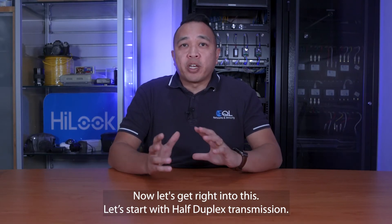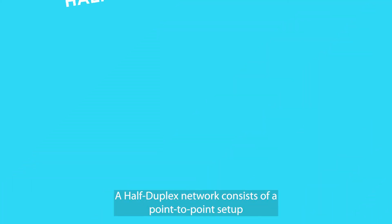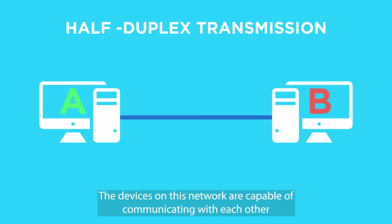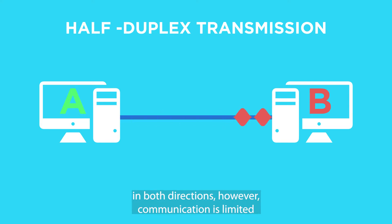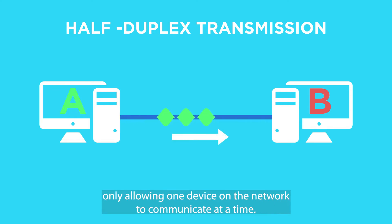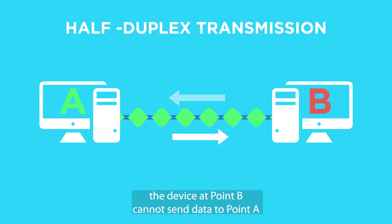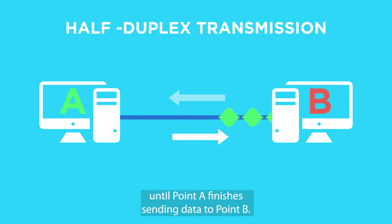Let's start with half duplex transmission. The half duplex network consists of a point-to-point setup where devices are connected via the network cable. The devices on the network are capable of communicating with each other in both directions. However, communication is limited, only allowing one device on the network to communicate at a time. If the device at point A is sending data to the device at point B, the device at point B cannot send data to point A until point A finishes sending data to point B.